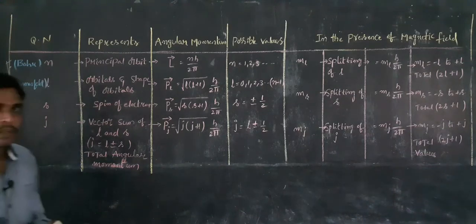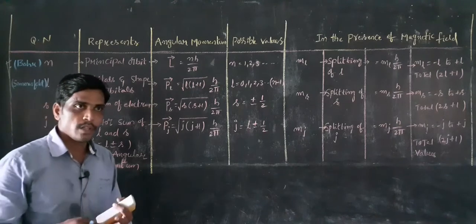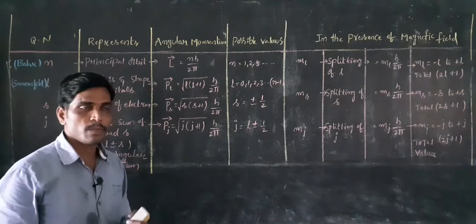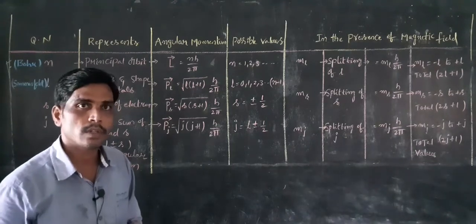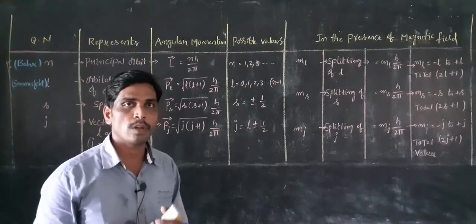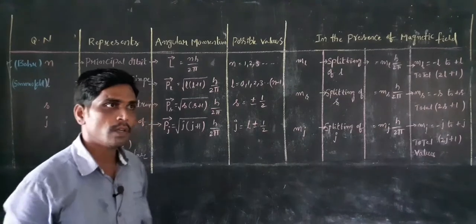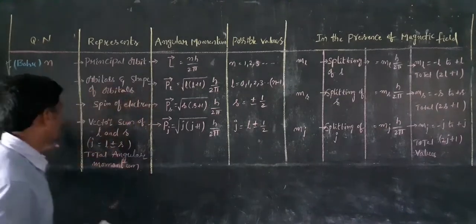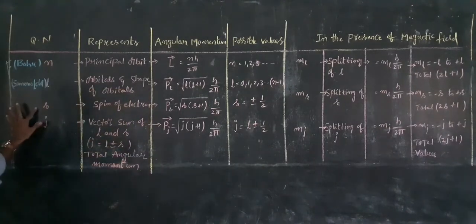The 4th quantum number is the spin quantum number, introduced by Uhlenbeck and Goudsmit. They introduced the quantum numbers in the context of the vector atom model.